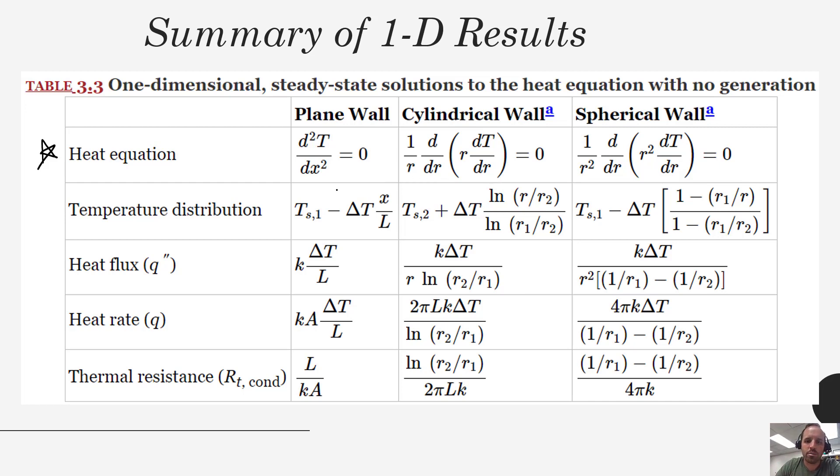Solving each of those systems we get our temperature distribution. And it is important to note that the ΔT in each of these equations is defined as TS1 minus TS2. And for the radial systems you can think of this as the inside wall temperature subtract the outside wall temperature. For a plane wall system this would be the surface temperature that's at the smaller x value and this would be the surface temperature that's at the larger x value.